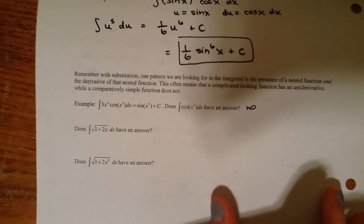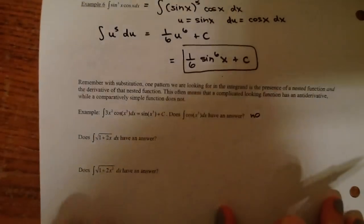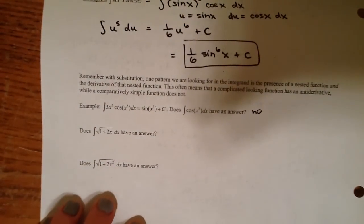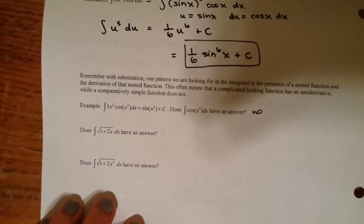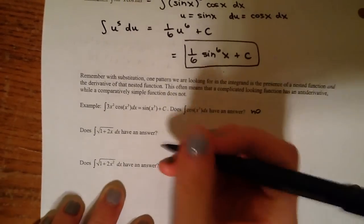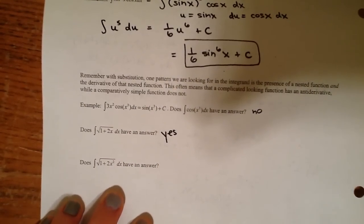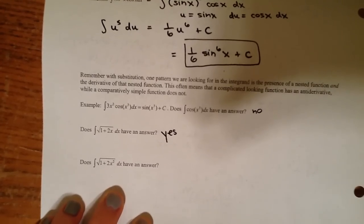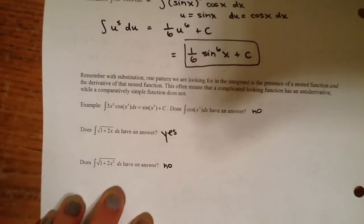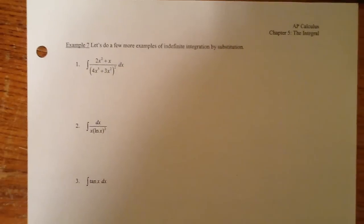Let's compare these next two. Square root of 1 + 2x — does that have an answer? My nested function is 1 + 2x, its derivative is 2. Even though I don't see a 2 there, I can mess with constants. I can throw in the 2 that should be there and balance it out with a 1/2. So yes, this one would have an answer. Next one: square root of 1 + 2x². The nested function is 1 + 2x², and the derivative we're expecting is 4x. We don't see a 4x, and we cannot balance out variables — only constants. So this one does not have an antiderivative. Sometimes the super complicated ones have antiderivatives and the simple ones don't.